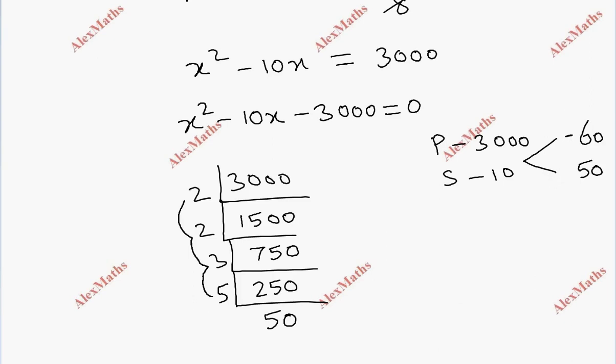The product is minus 3000. The sum is minus 10. So minus 60 and plus 50 work. In a quadratic equation, we factor as (x minus 60)(x plus 50) equals zero.